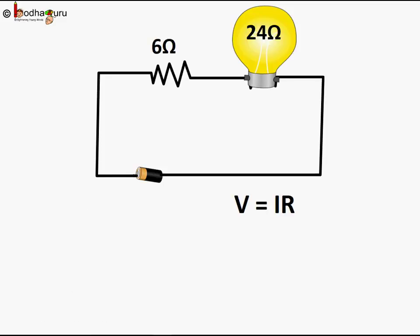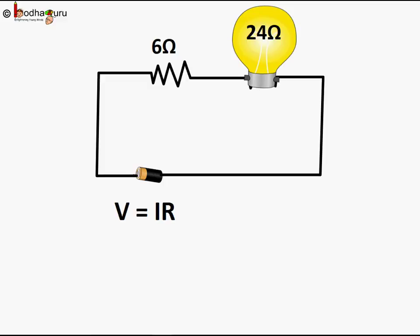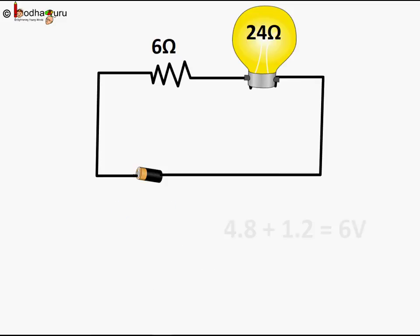Now in a series connection, the potential difference across each resistor can be different. So what is the potential difference across the electric bulb? It is 0.2 into 24 which is equal to 4.8 volts, so it is less than the 6 volts seen across the cell. The potential difference across the other resistor is 0.2 into 6, which is equal to 1.2 volts. The sum V1 plus V2 is equal to 4.8 plus 1.2, which is equal to 6 volts, the same as V, the potential difference of the cell.